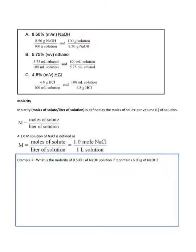Let's look at some examples. If you have an 8.5% by mass solution of sodium hydroxide, that tells you there are 8.5 grams for every 100 grams of solution. We can use this information as a conversion factor. The same is true for percent by volume — a 5.75% by volume solution of ethanol means you have 5.75 milliliters of ethanol for every 100 milliliters of solution, or 5.75 liters per 100 liters.